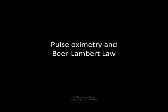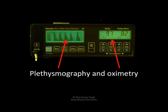Now let's look at another system that uses Beer-Lambert law — that's pulse oximetry. There are two parts to pulse oximetry: first is the plethysmograph that measures the pulse, and then comes the oximetry — the saturation — which we are very concerned about.